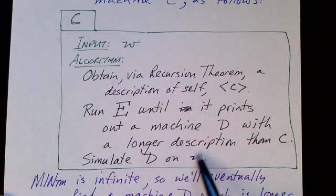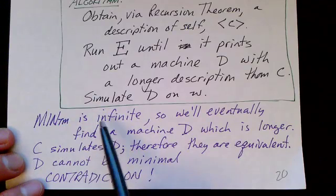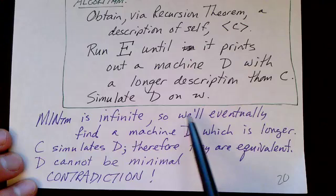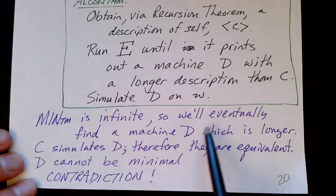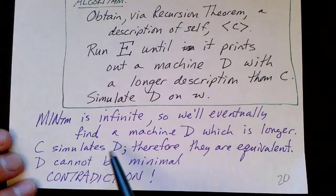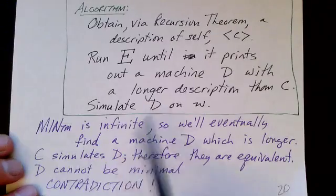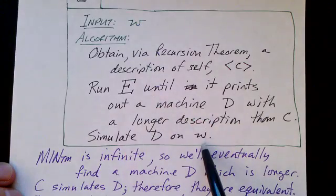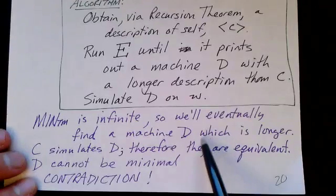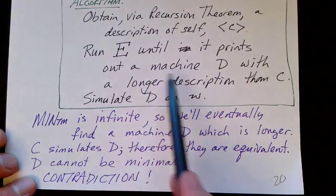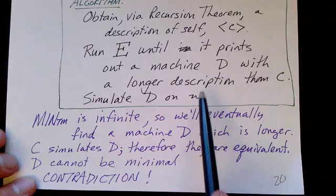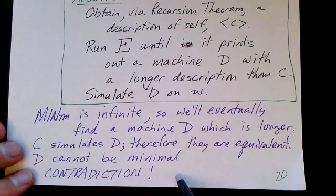We assume the set of minimal Turing machines is infinite, since there are infinitely many Turing machines and functions, so we will eventually find a machine D which is longer than C. Since C simulates D, C and D are equivalent. But D was listed by the enumerator as one of the minimal Turing machines, meaning no shorter equivalent machine exists — yet C does the same thing and has a shorter description. That's a contradiction. Therefore the set of minimal Turing machines is not Turing recognizable.